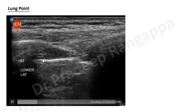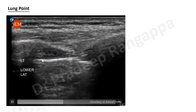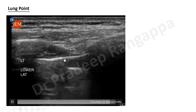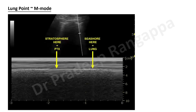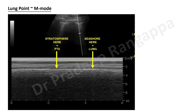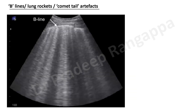Then there's something called the lung point. In this video, you can see lung sliding here — but no sliding there — indicating a transition from normal lung to a pneumothorax air pocket. When you put M-mode at the lung point, you see an alternating seashore sign and stratosphere sign. A large pneumothorax shows uniformly stratosphere sign, but the lung point — with alternating patterns — indicates a small or loculated pneumothorax.